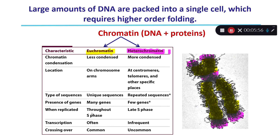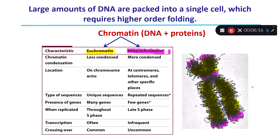Euchromatin is replicated throughout S phase and is transcribed often, so it is active DNA. This is where the protein-coding genes are, and so this DNA is often being used and transcribed into RNA.